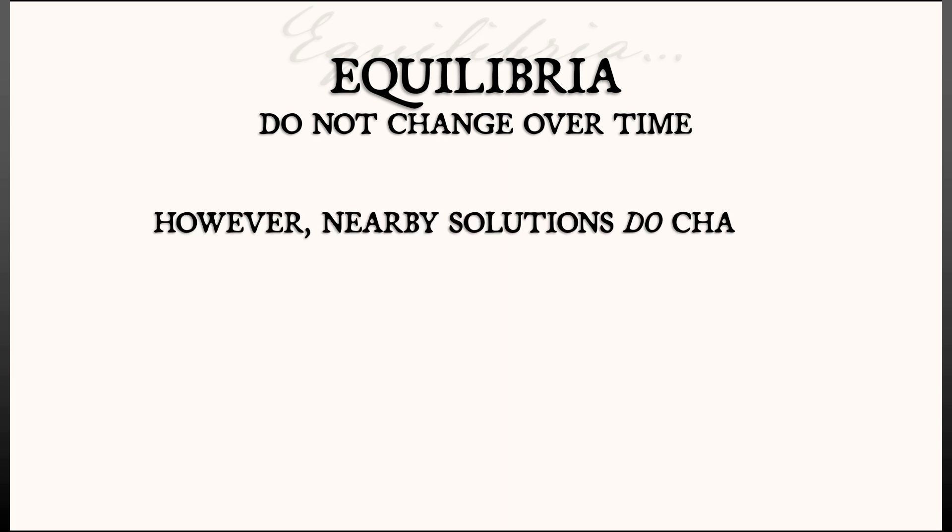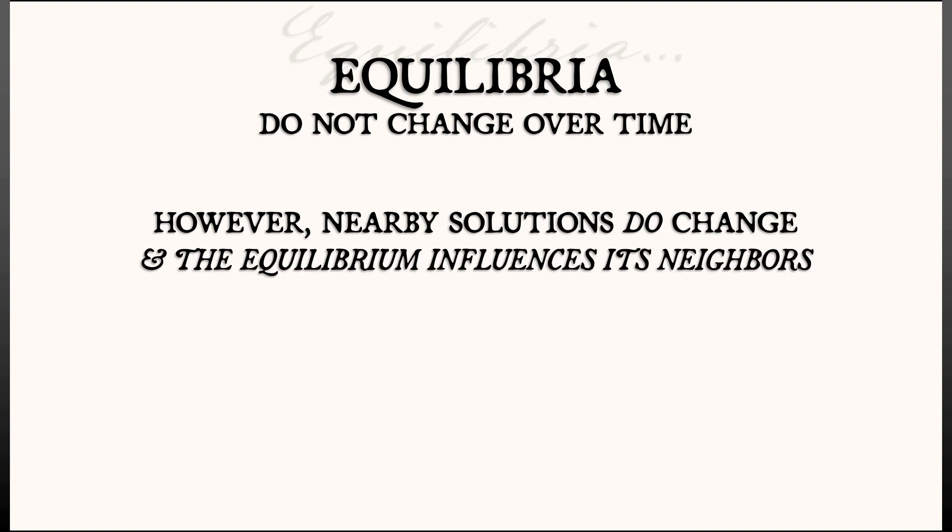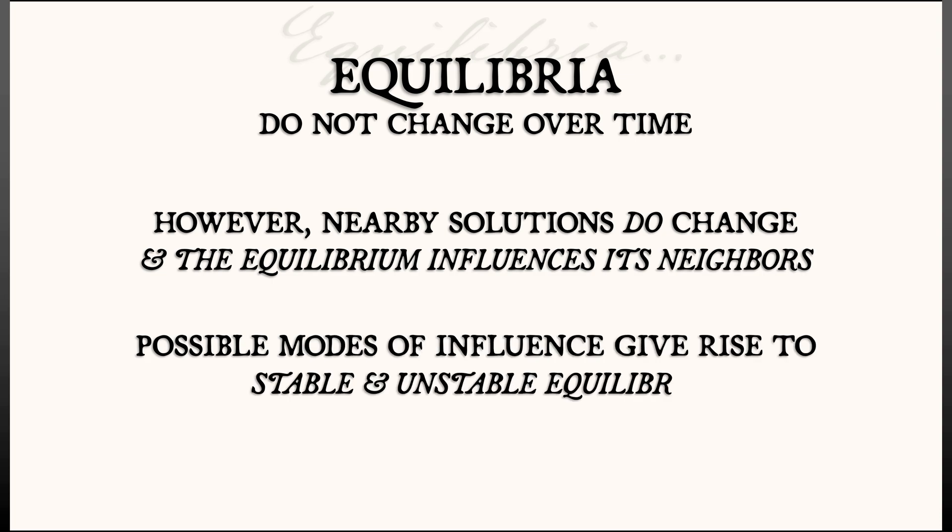So having seen equilibria, solutions that do not change, what really matters is that nearby solutions do change. And the equilibrium influences that change. And the two different possible modes of such influence give rise to stable and unstable equilibria. We've classified them in linear systems. Now it's time to classify them in nonlinear systems.